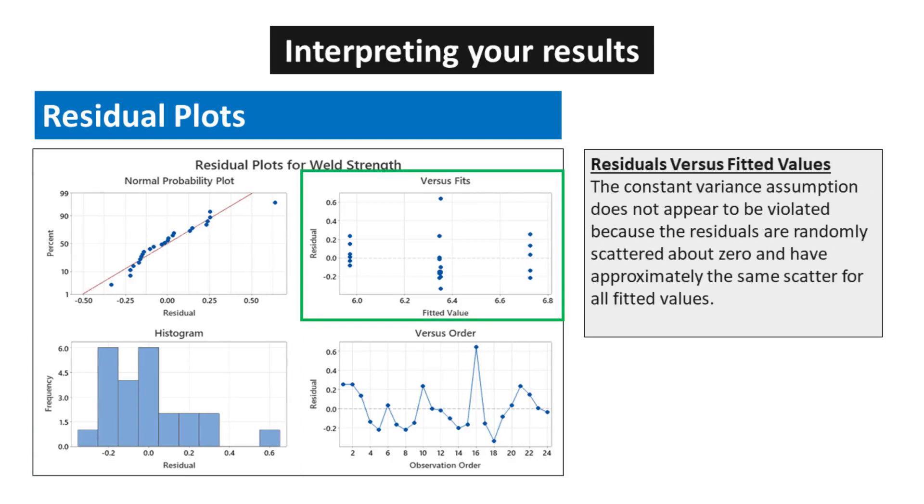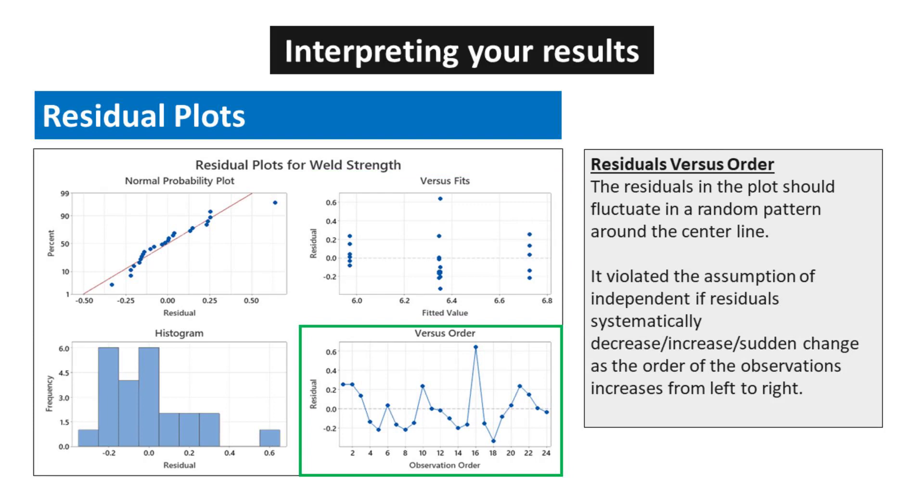For Residuals versus Fitted Values, the constant variance assumption does not appear to be violated because the residuals are randomly scattered about zero and have approximately the same scatter for all fitted values. For Residual versus Order, the residuals in the plot should fluctuate in a random pattern around the center line. It violates the assumption of independence if residuals systematically decrease or increase or show sudden change as the order of the observations increases from left to right.